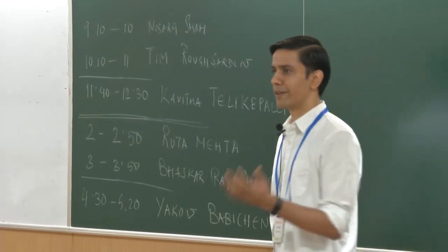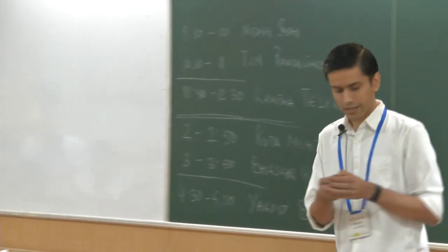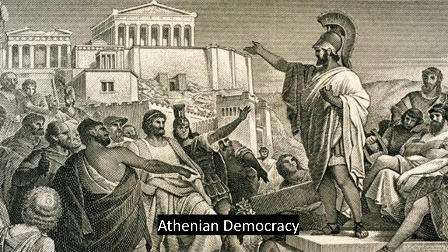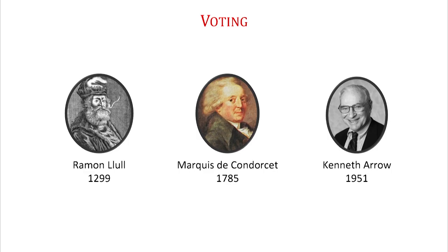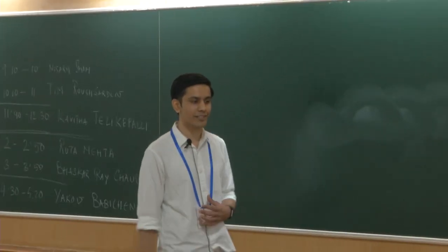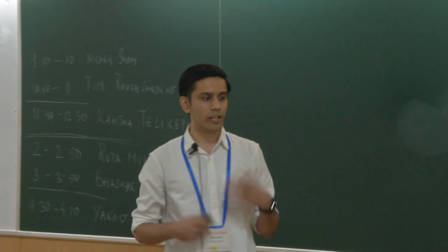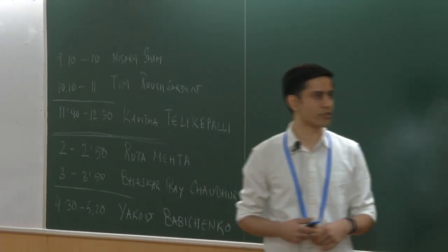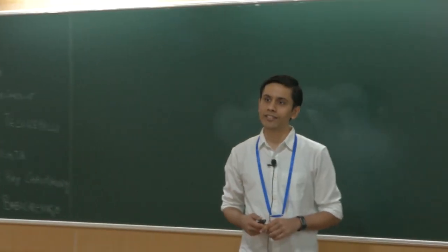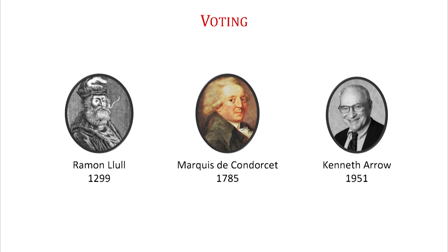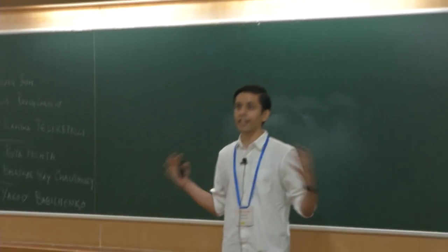The topic of this talk is voting. The roots of voting go back to the rise of democracy in ancient Greece, and voting has been studied formally for many centuries — starting from the work of philosopher Ramon Llull, whose lost manuscripts were discovered in 2001, through Marquis de Condorcet in the late 18th century, to the celebrated Nobel prize-winning work of Kenneth Arrow in the 20th century.